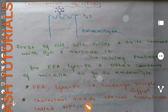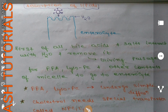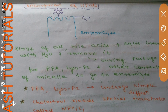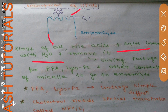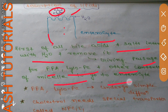Coming to the absorption of lipids: bile acids and bile salts interact with water molecules at the enterocyte surface and remove them, giving passage to free fatty acids, lyso-phosphatidylcholine (lyso-PC), and other micelle contents to enter the enterocyte cell. Free fatty acids and lyso-PC both undergo simple diffusion and do not require any carrier protein.